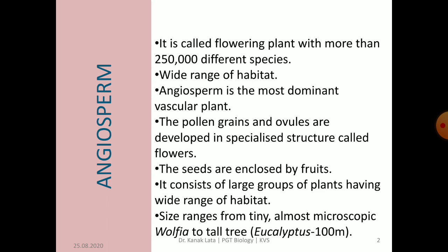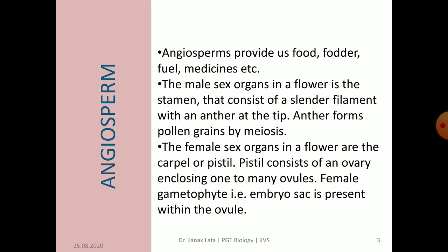The reproductive structure of an angiospermic plant is the flower, where pollen grains and ovules are developed. Size of angiosperm ranges from tiny, almost microscopic Wolffia to tall tree eucalyptus that is 100 meters tall. Angiospermic plants provide food, fodder, fuel, timber and medicines.